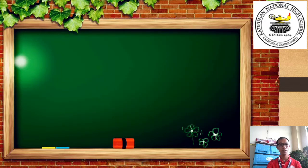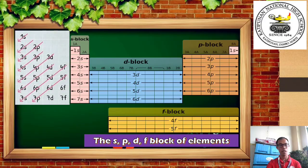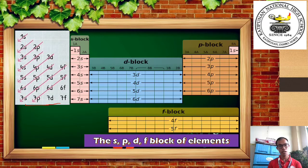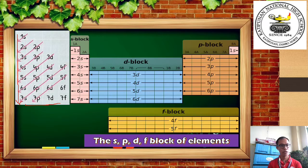Now that you know what the electron distribution mnemonics is and how to use it, let us connect it to the blocks of elements. From the mnemonics, you have 1s through 7s, going down. You also have 2p to 7p, 3d to 7d, and 4f to 5f. These correspond to the different blocks on the periodic table.